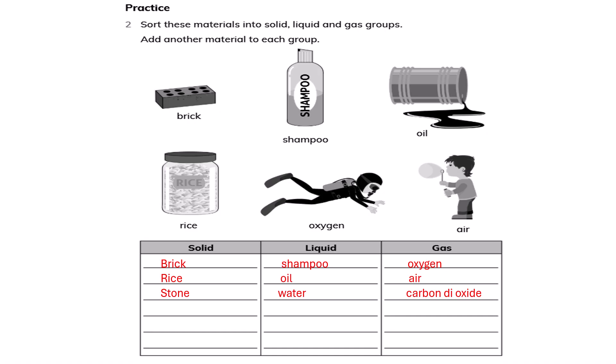Liquids are shampoo, oil, and water. In gases: oxygen, air, and carbon dioxide. Stone, water, and carbon dioxide are the 3 extra materials that were added to each group.